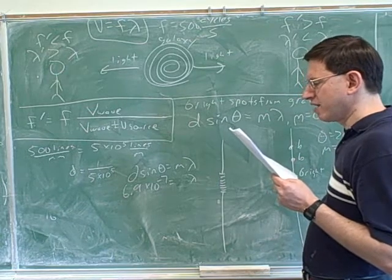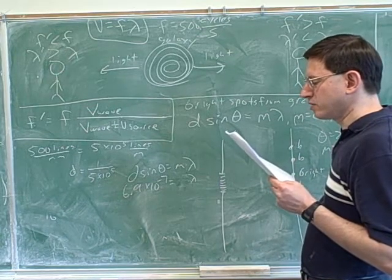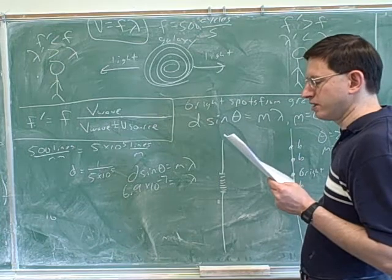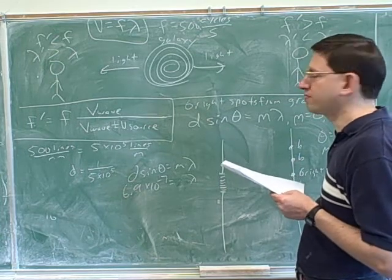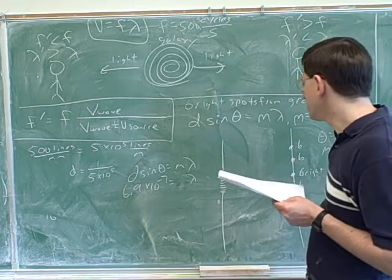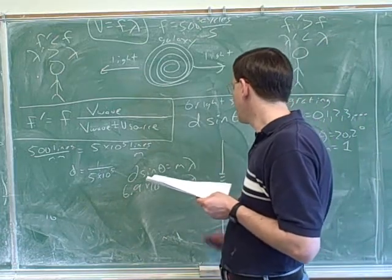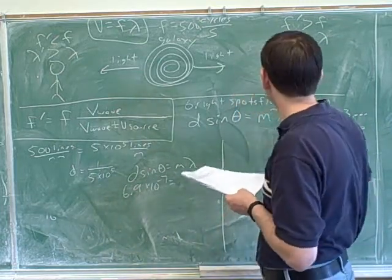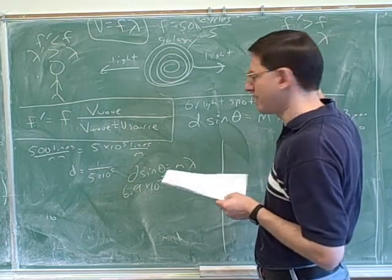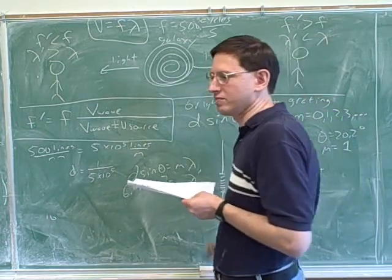Yeah, they didn't quite spell that out, but they're implying the spectral line of the hydrogen that was at 20.2 degrees. They're implying that that was from that galaxy. Yeah. So, this wavelength is the wavelength of the light that we are observing from that galaxy. This is the lambda prime.